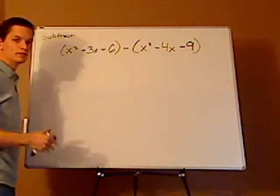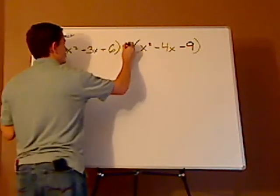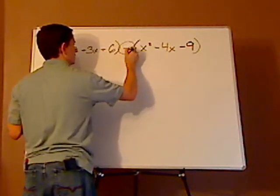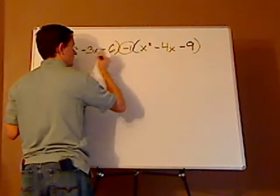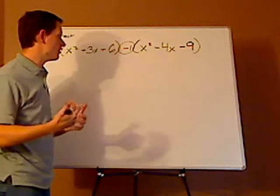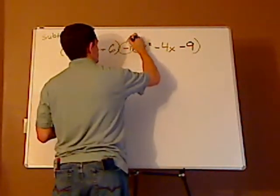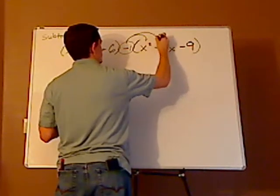So, what I recommend to my students, before they do anything, is that they distribute the negative sign. Because you have, like, a negative 1 here, right? What's implied in front of the parentheses is a 1. So, you distribute a negative 1 to each of these terms.